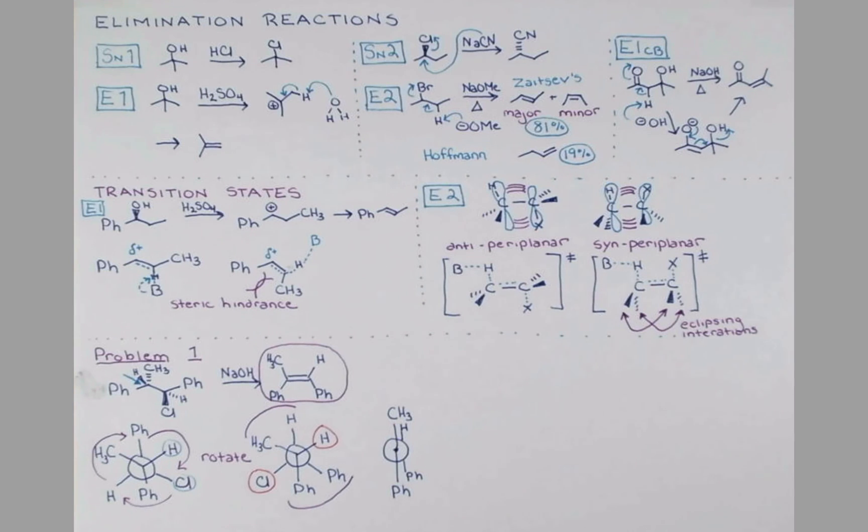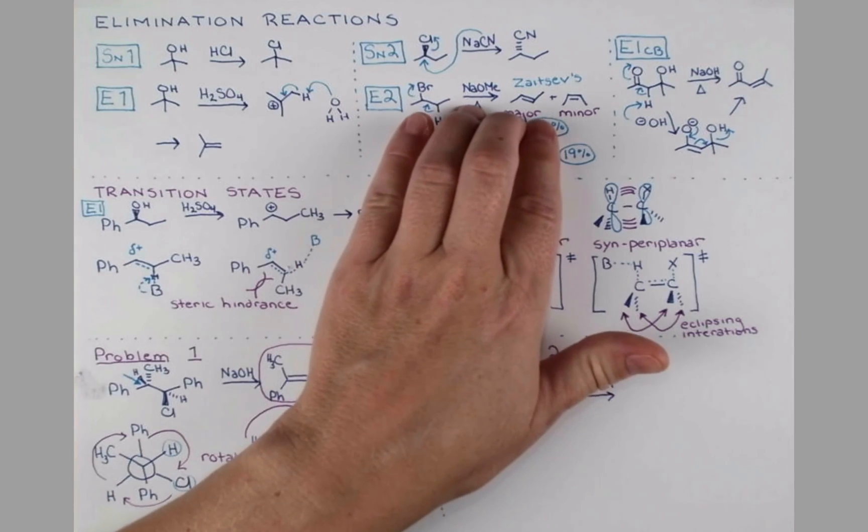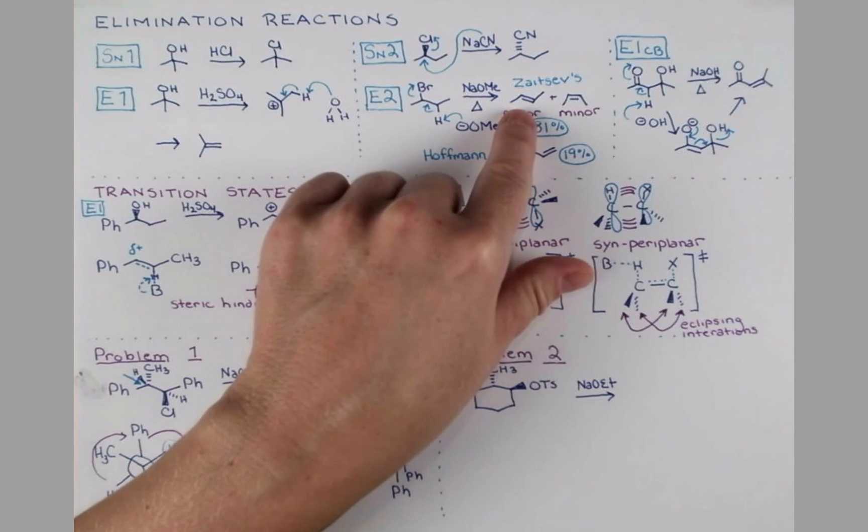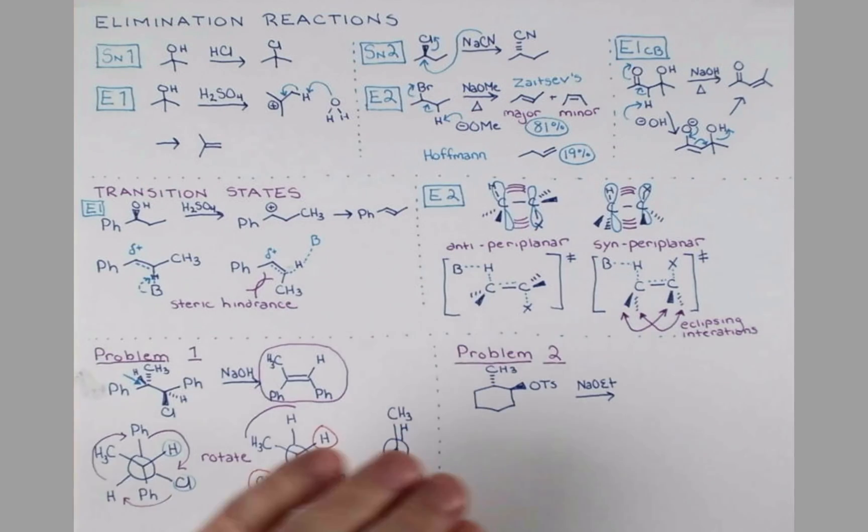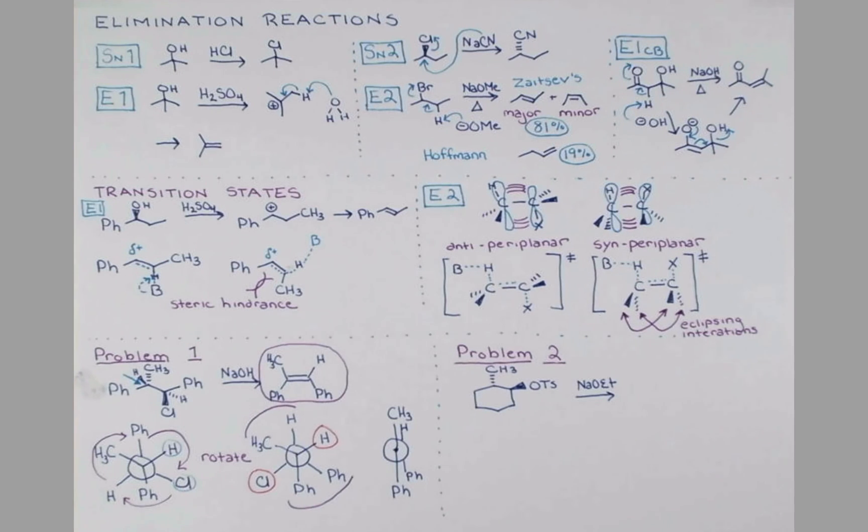Another case where the anti-periplanar geometry becomes very important is chair cyclohexane. For this problem, we're treating this cyclohexane with a tosylate leaving group with strong base, NaOEt. Now in these acyclic examples, we form the more substituted alkene as the major product. But in this case, we need to make sure by drawing a chair that hydrogen atoms are actually anti-periplanar to our leaving group. There's a hydrogen atom here that can eliminate to form the more substituted alkene, and there's two hydrogen atoms here that are also potentially able to eliminate.